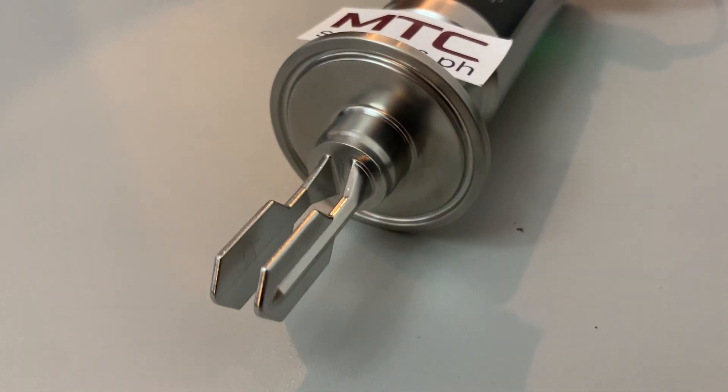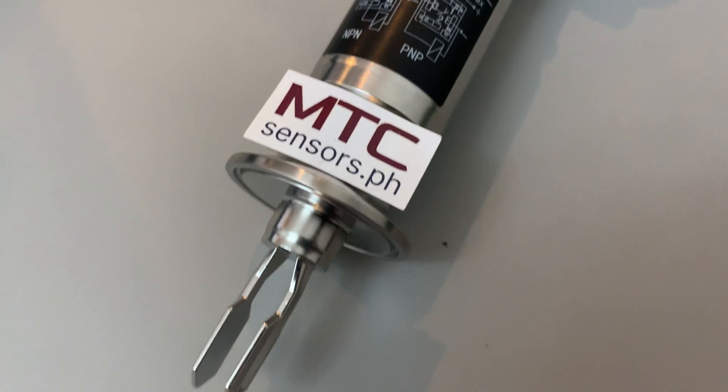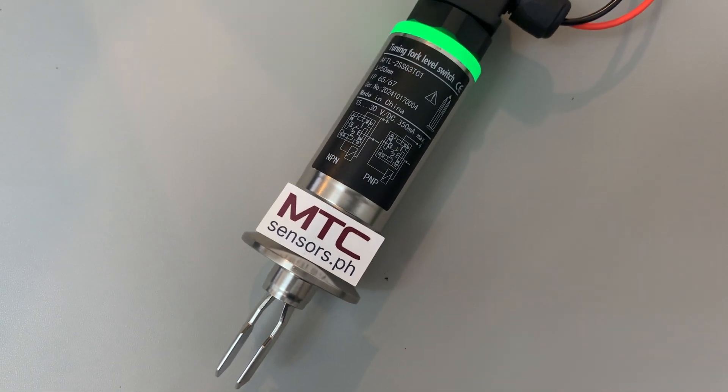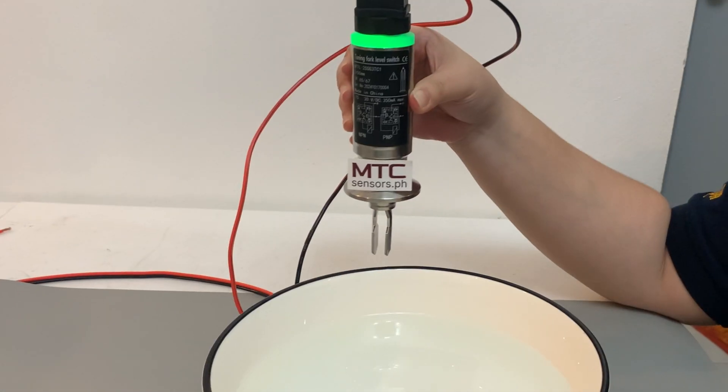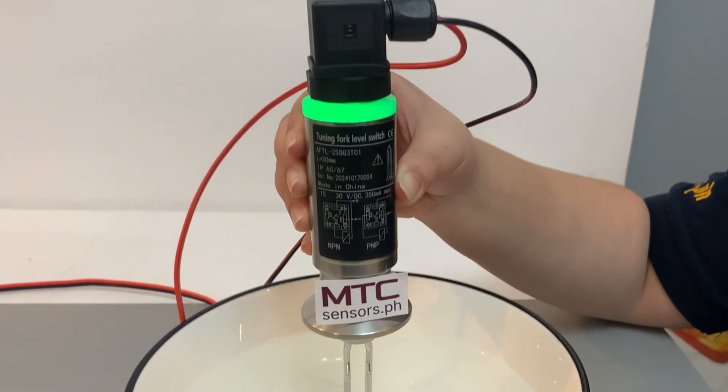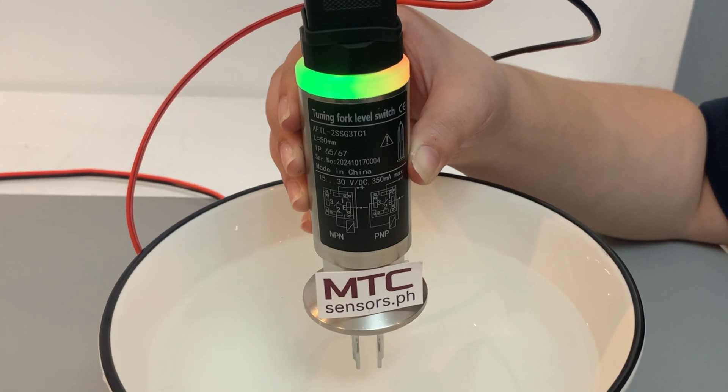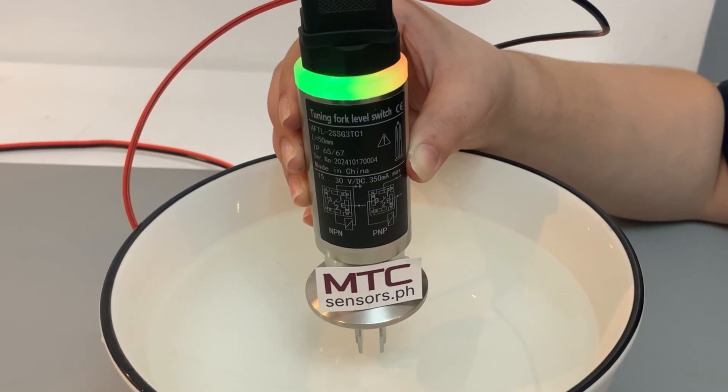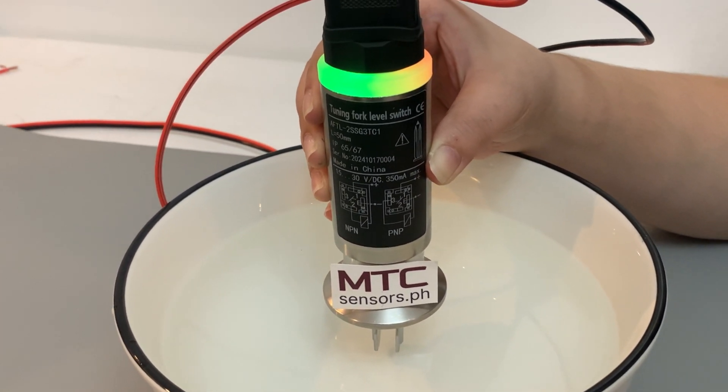The tuning fork-level switch operates based on the tuning fork principle. A piezoelectric crystal vibrates the tuning fork at a natural frequency of about 1,100 Hz. Changes in the liquid or solid level cause a shift in this frequency, which the electronics detect to switch output states.